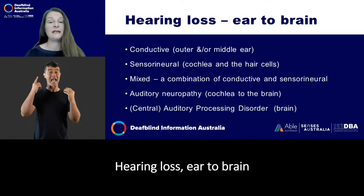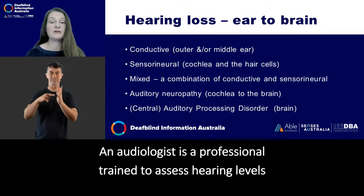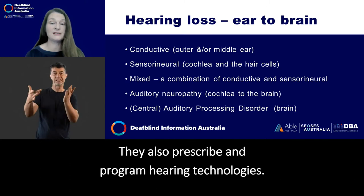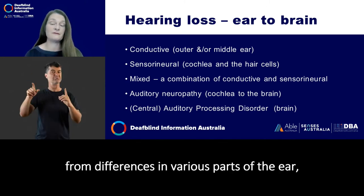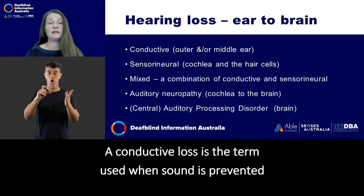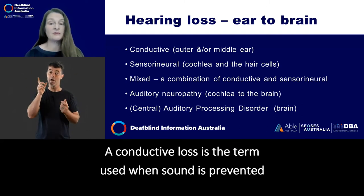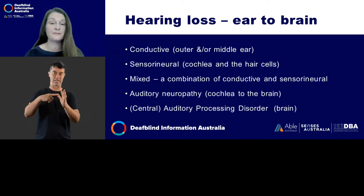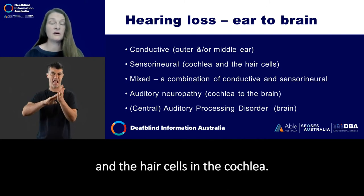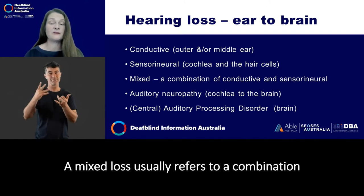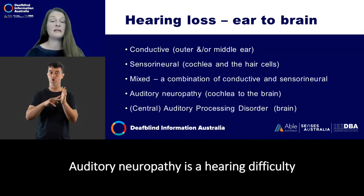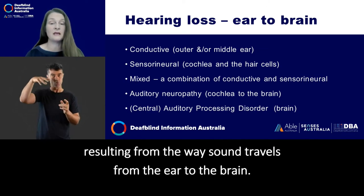Hearing loss — ear to brain. An audiologist is a professional trained to assess hearing levels and types of hearing loss. They also prescribe and program hearing technologies. Different hearing levels result from differences in various parts of the ear, the nerves or the brain, or be a mixture of these. A conductive loss is the term used when sound is prevented from travelling through the outer or middle part of the ear. A sensory neural loss originates from differences or damage to the cochlea and the hair cells in the cochlea. A mixed loss usually refers to a combination of conductive and sensory neural loss.